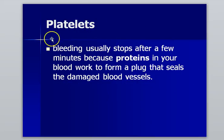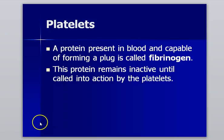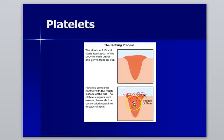The third component is platelets. The major thing about platelets is that they're responsible for clotting the blood. They produce little protein filaments that form over top of an injury, trapping red blood cells and white blood cells so that all the blood components won't be able to leak out of the circulatory system.